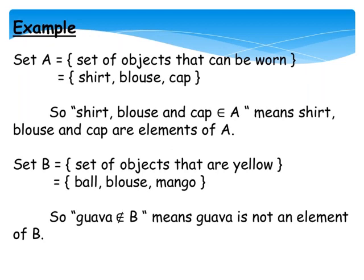For example, Set A: Set A is equal to set of objects that can be worn, equals shirt, blouse, cap.